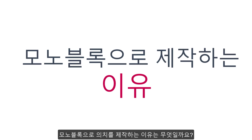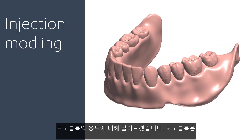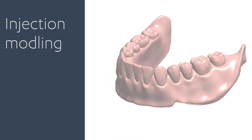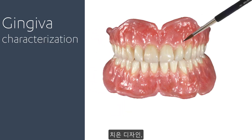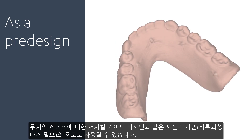So why would you produce the denture as a monoblock? There are a few purposes for doing that. It can be used for injection molding, as a try-in denture which can be copied for final denture design, for gingiva characterization, or as a pre-design — for example, for designing surgical guides for an edentulous case, which will require adding radio-opaque markers.